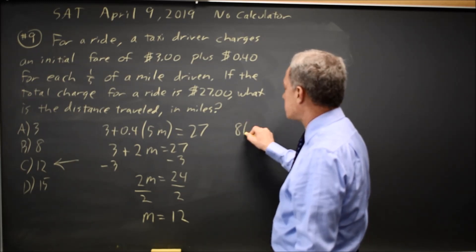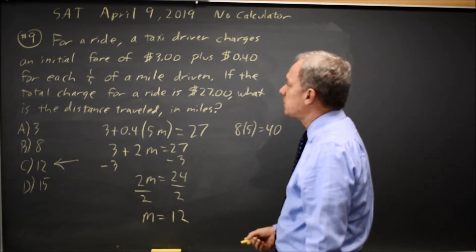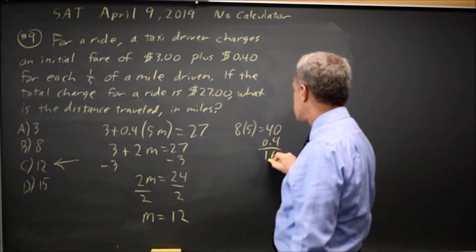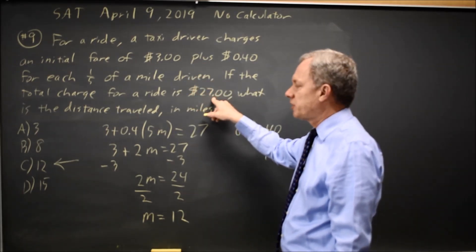8 miles times 5 fifths per mile equals 40 fifths of a mile, and 40 times 0.4 is $16 plus 3 is $19. That's too small for a $27 fare.